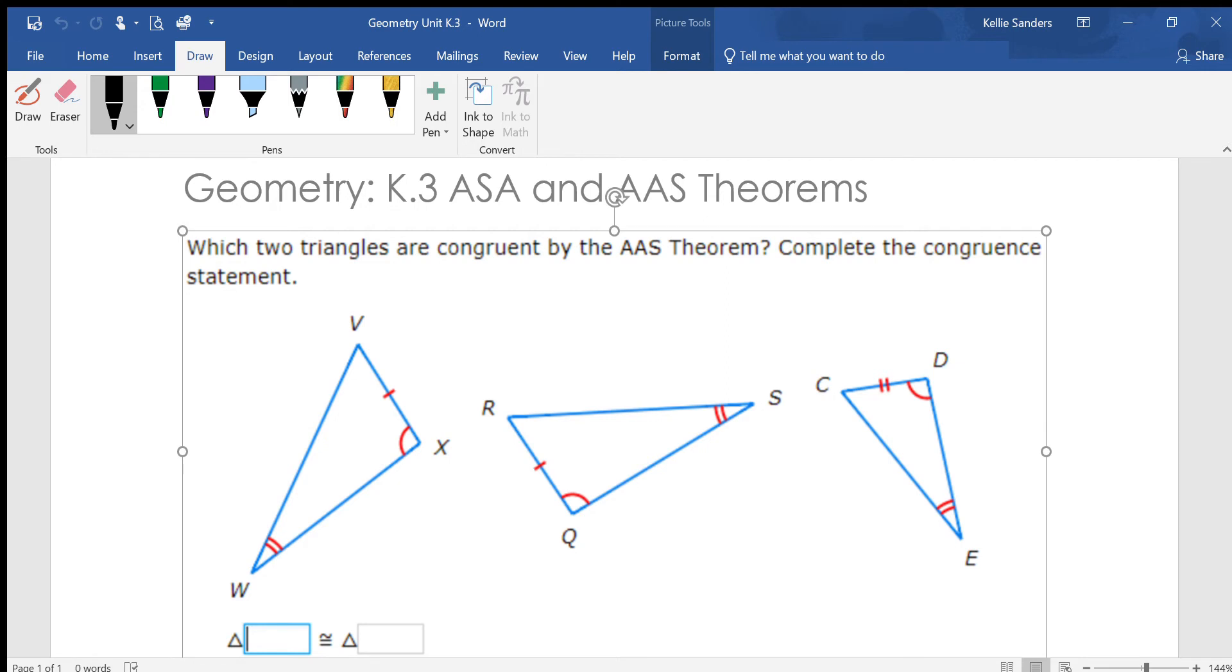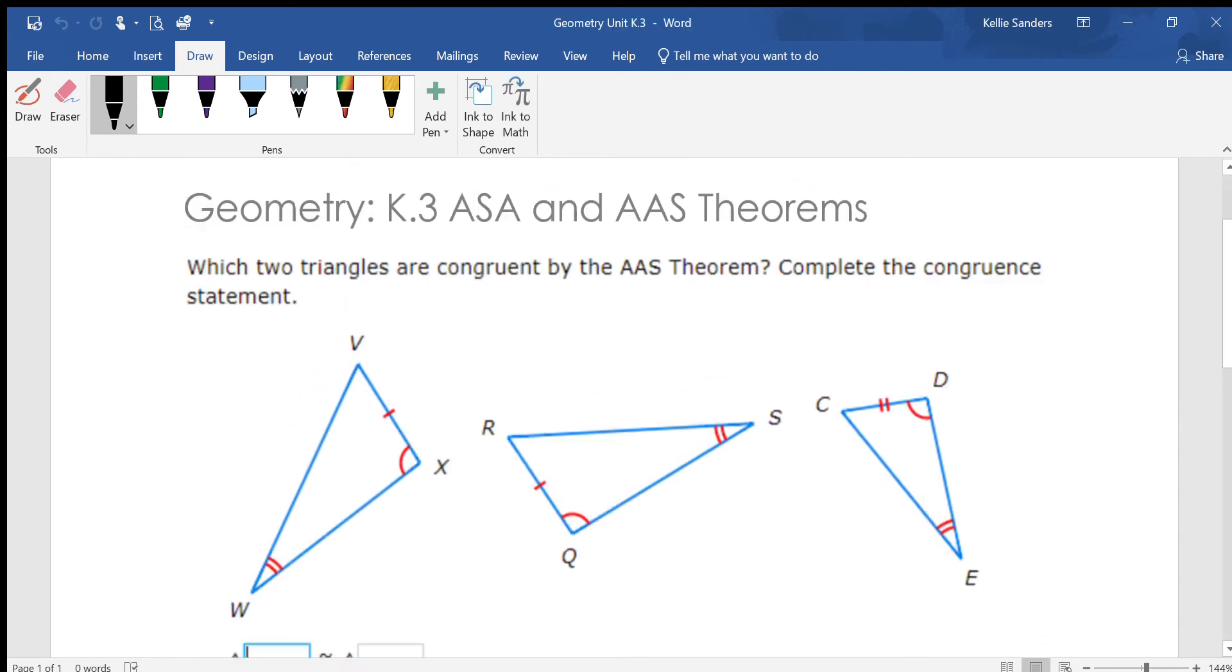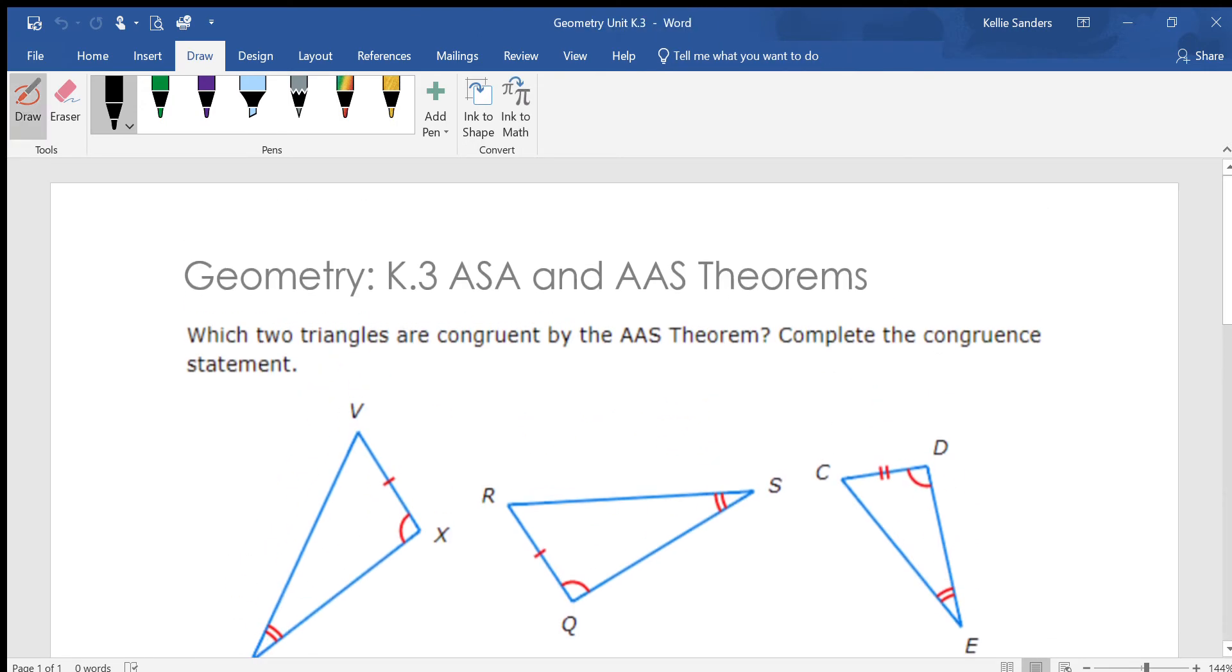Angle Side Angle and Angle Angle Side - basically on both of these, it's telling you that if you have two angles and you have a side, either one of them is going to work. Now, Angle Side Angle, the side is directly between the two angles that you know.